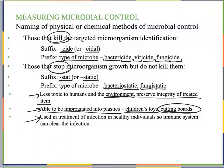Bacteriostatic agents are also used in treatment of infection in healthy individuals so that the immune system can clear the infection. When we give someone something to treat an infection, we're often just stopping the microorganisms from growing rather than killing them. Once bacterial growth is stopped, the immune system can take over and start winning the fight — and this exposes the immune system to the pathogen so it can learn from it, which we'll discuss more in Chapter 18.